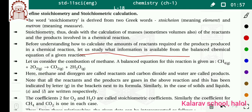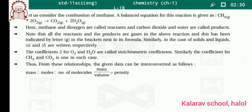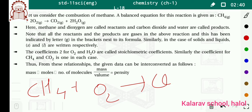Toh, chemical equation ko balance karna padega. Here, let us do the combustion of methane — methane reacts with oxygen. A balancing equation for this reaction is given as CH4 plus O2 gives CO2 plus H2O. Yahan aapko directly balance equation di hui hai — CH4 react with O2 to produce CO2 plus H2O.